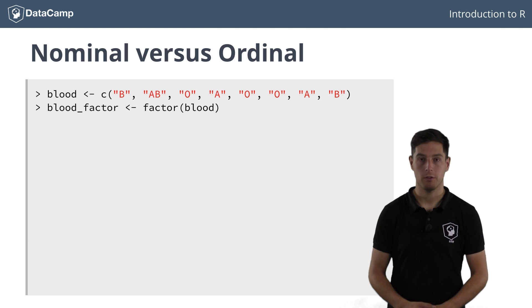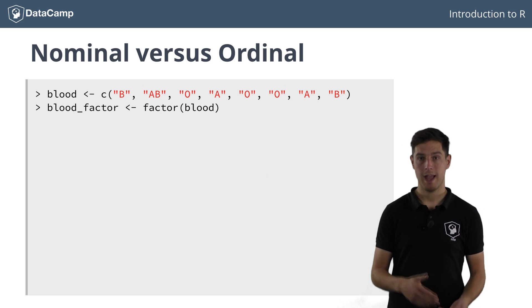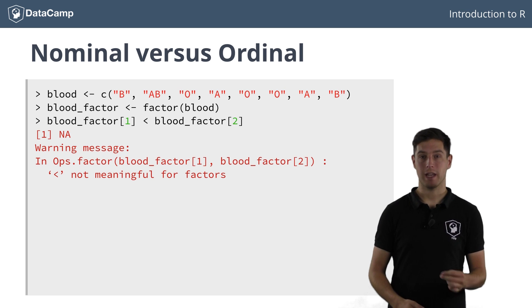In the world of categorical variables, there's also a difference between nominal categorical variables and ordinal categorical variables. The nominal categorical variables have no implied order. For example, you can't really say that the blood type O is greater or less than the blood type A. O is not worth more than A in any sense I can think of. Trying such a comparison with factors will generate a warning, telling you that less than is not meaningful.